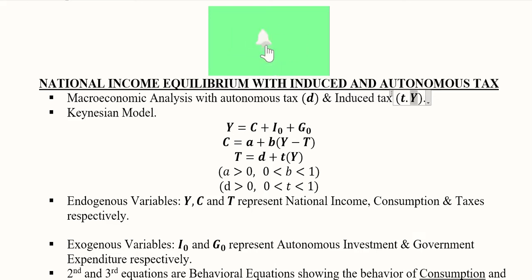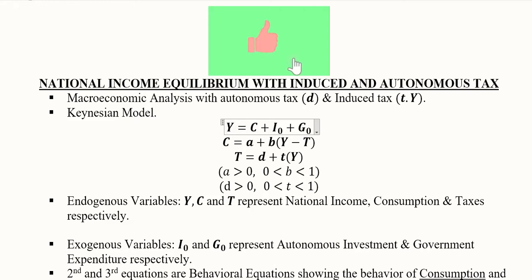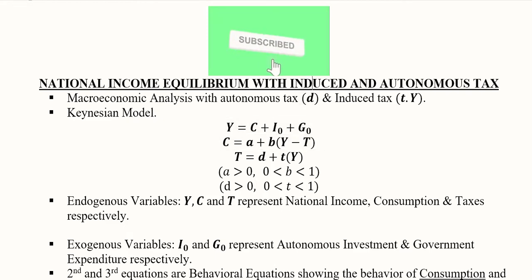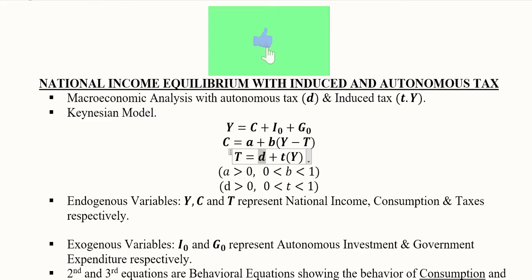In the Keynesian model, using the expenditure approach, we have consumption, autonomous investment, and autonomous government expenditure. We subtract tax from income, and tax has two components: the autonomous part and the induced part. We now substitute these values into the model.